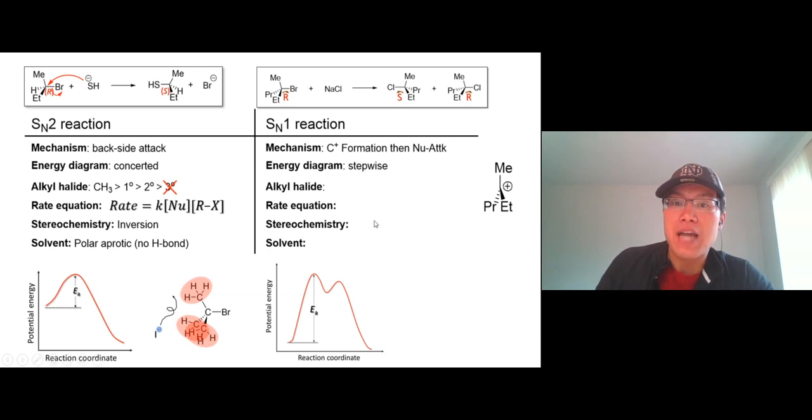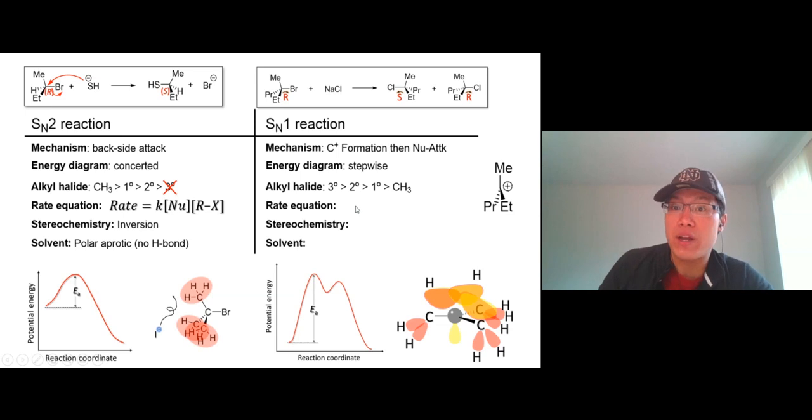The alkyl halide: the bigger the better because of the higher degree of hyperconjugation. So tertiary is the best, followed by secondary. Primary and methyl never do an SN1 reaction, at least alone. You might see a case of primary, but that's because of something else stabilizing it, like resonance or something.